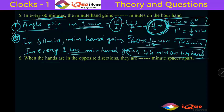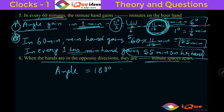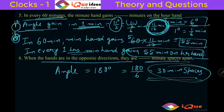When the hands are in the opposite direction the angle is 180 degrees. So 180 divided by 6 is 30 minute spaces. When the hands are opposite they are 30 minute spaces apart.